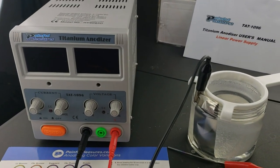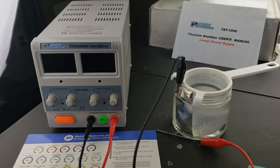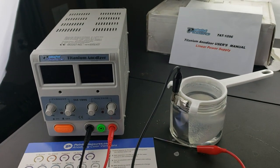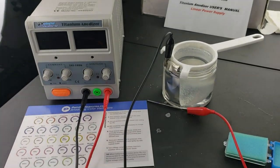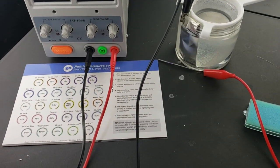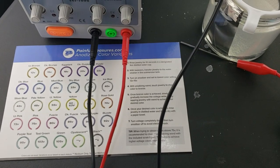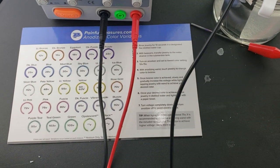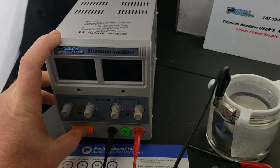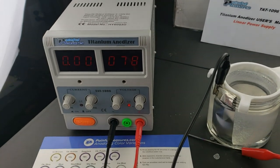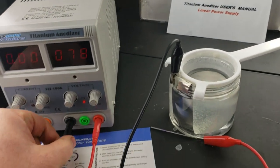This is what the anodizer looks like. The version I purchased, and there's many of them out there, is from Painful Pleasures, which is a piercing supply place. Definitely make sure your significant other knows what that is on the credit card bill. It's a very simple piece of equipment with just a power switch.